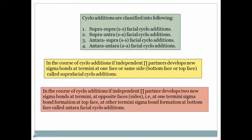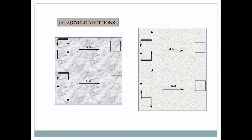For suprafacial cycloaddition, both sigma bonds form from the same side of the ethylene. For antarafacial cycloaddition, one terminus uses one face and the other terminus uses the opposite face — for instance, one side uses the re-face and the other uses the si-face. In an antarafacial cycloaddition, the independent partner develops two new sigma bonds at termini on opposite faces: one terminus sigma bond at the top face and another at the bottom face.